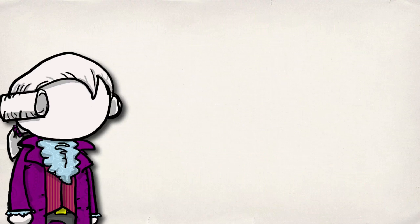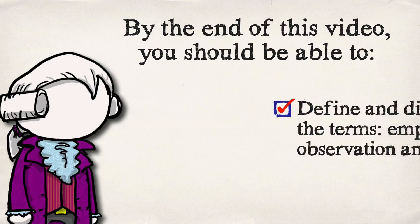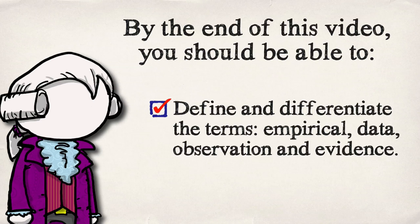This first video is really just about some of the basic terms of science — the idea of evidence, data, observations, things like that. We're going to go a lot further in the rest of the series into the scientific method and theories and laws and things like that, but let's make sure we're all on the same page.